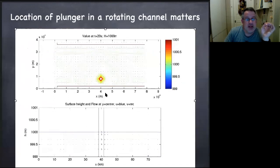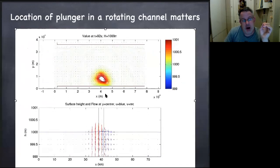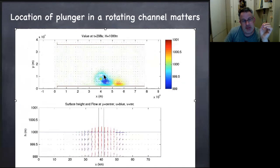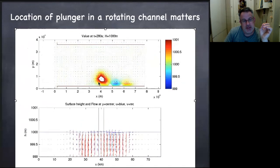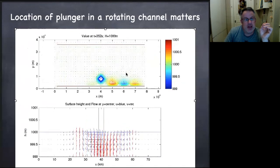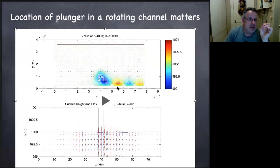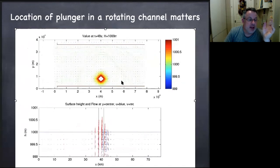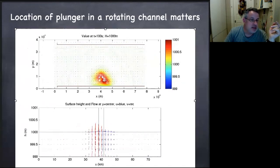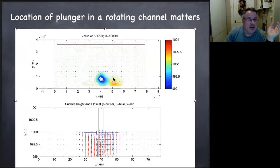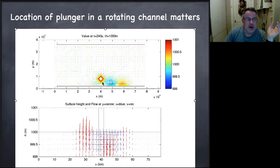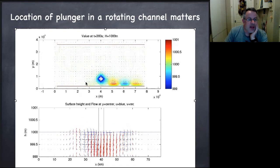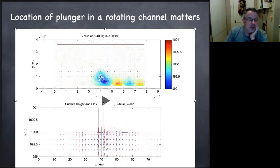If you put that plunger — that source — right up against the wall, you see that you don't excite waves on the opposite wall, but you excite positive and negative sea surface anomalies that really hug against the coast. The distance away from the coastline that these waves decay is the Rossby deformation radius, which in this case is about one times ten to the fourth meters for this scale.